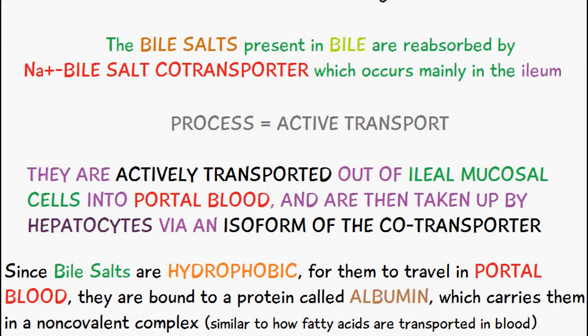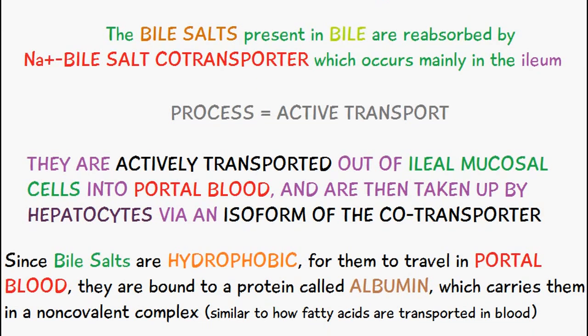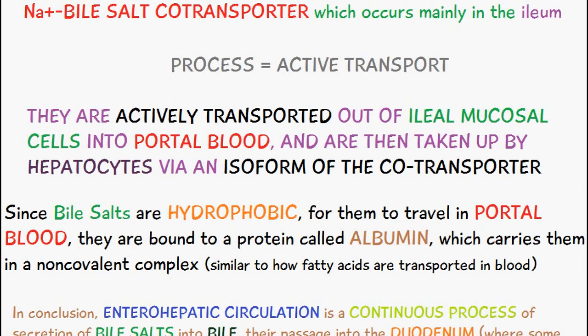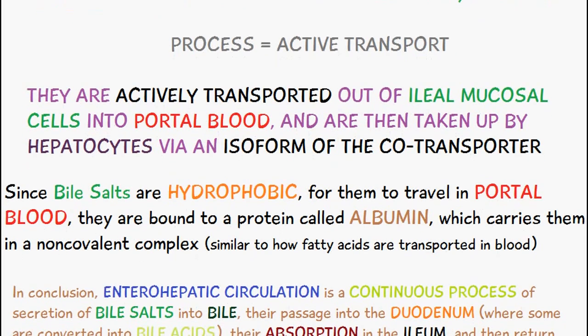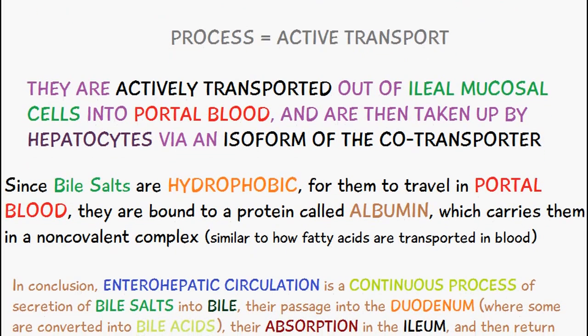Since bile acids are hydrophobic, for them to travel in portal blood they are bound to a protein known as albumin, which carries them in a non-covalent complex. This is similar to how fatty acids are transported in blood.